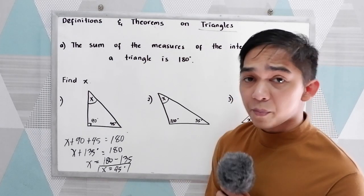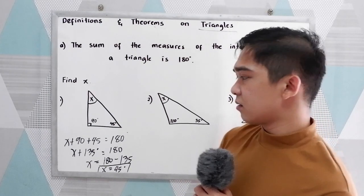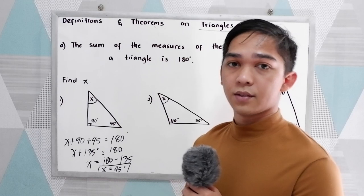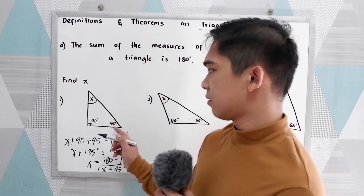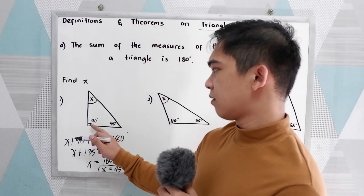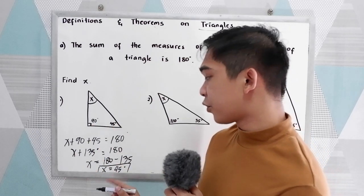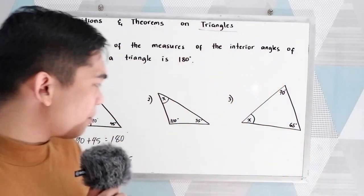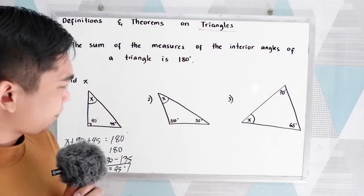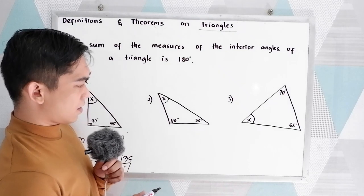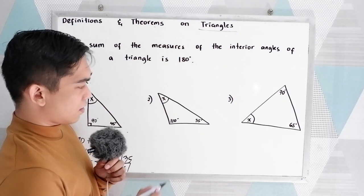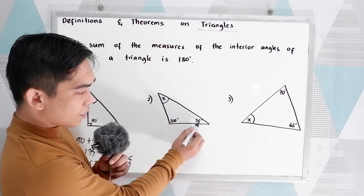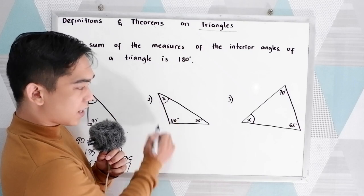If you can solve mentally, then you don't need to show your solution. So, 135 plus 45 equals 180. Next, number two. We have the given: 110 and 35, then x.